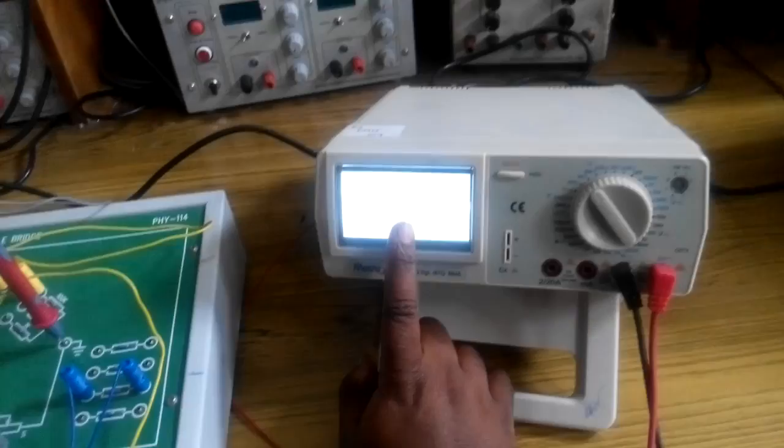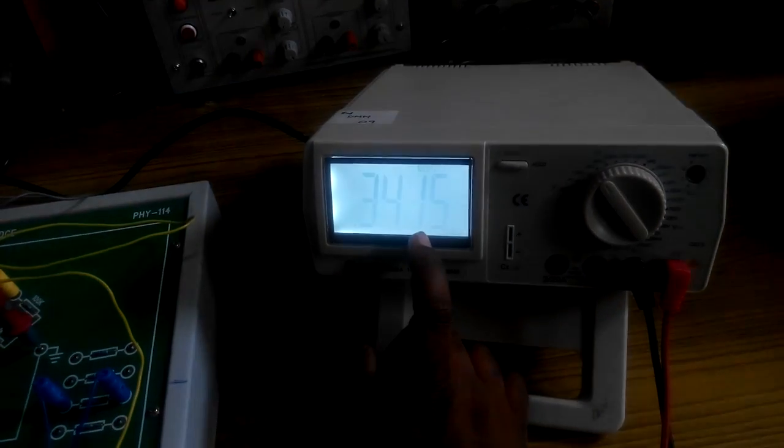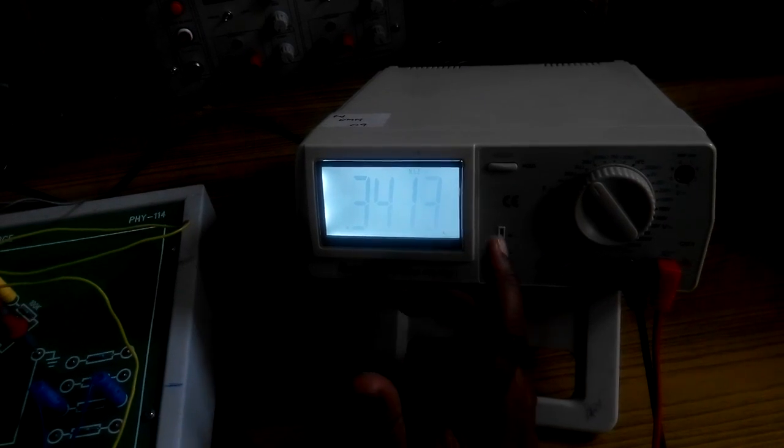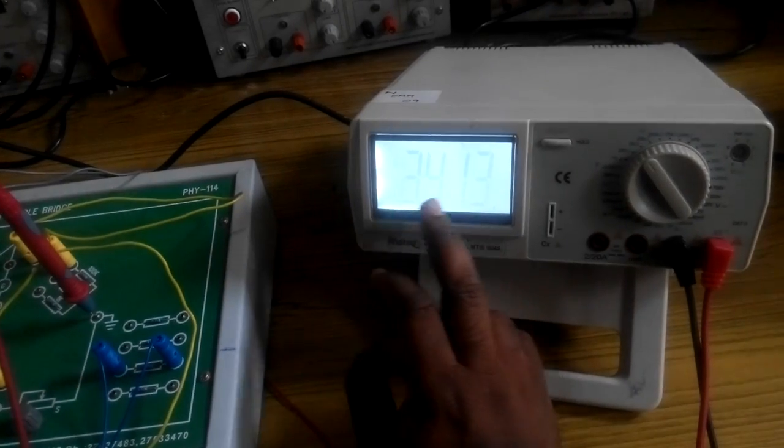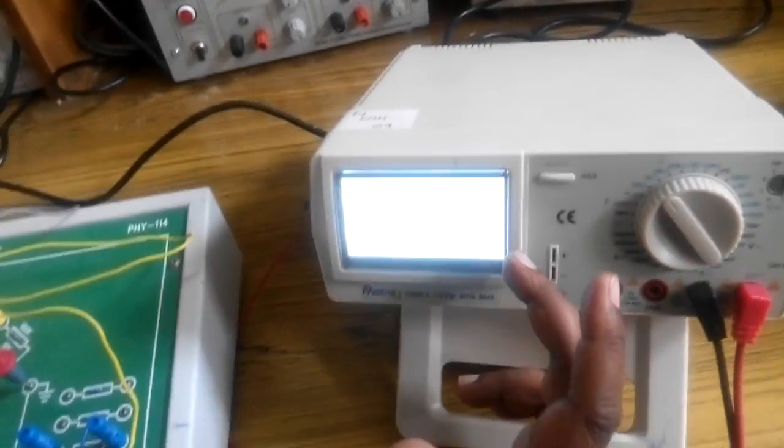The measured value of resistance is 341.3 ohms. In terms of kilo ohms it is 0.3413 kilo ohms.